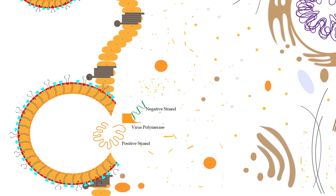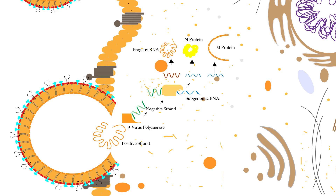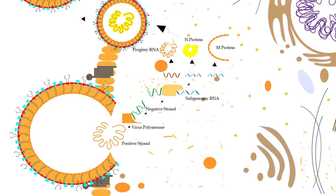First, the virus synthesizes its RNA polymerase, which is required to synthesize the minus strand using the main positive strand as a template. Subsequently, the negative strand serves as a template to transcribe smaller subgenomic positive RNAs, which are used to synthesize all other proteins. Furthermore, this negative strand serves for the replication of a new positive-stranded RNA genome, which becomes the genome for the progeny virus. The proteins and genomes accumulate and assemble to form a progeny virus, which is released from the host cell via exocytosis.